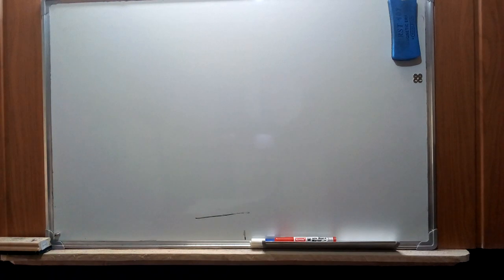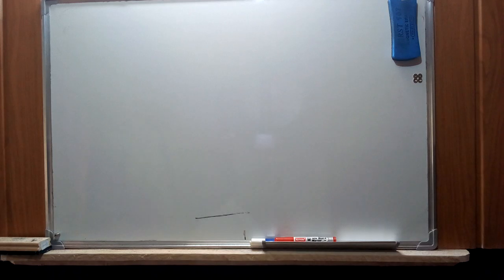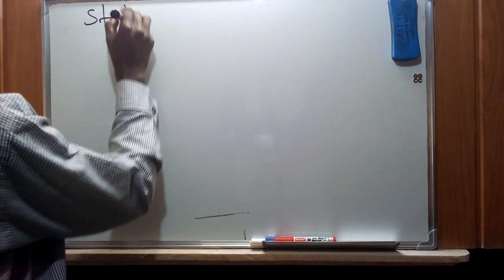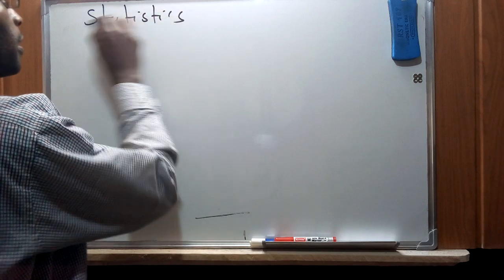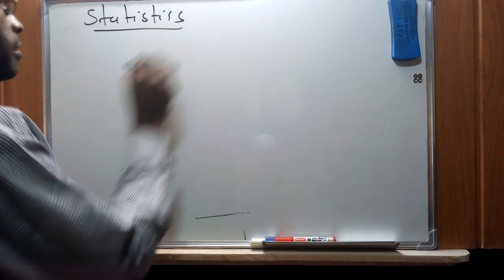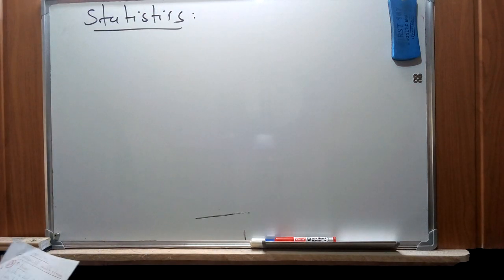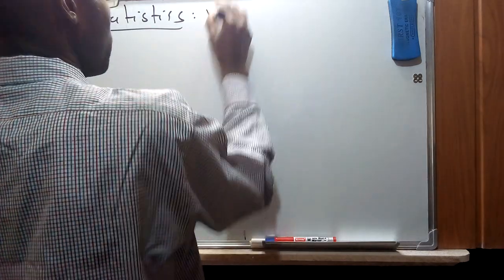In our previous video we looked at the concept of measures of central tendency. Today we are going to continue in statistics and look at the concept of measures of variability and dispersion.